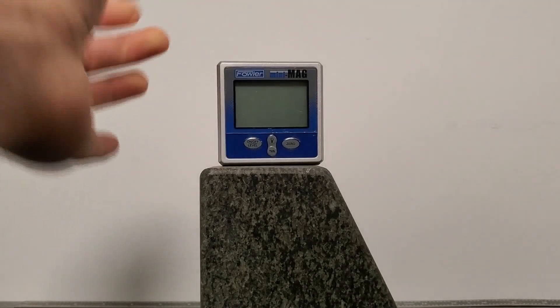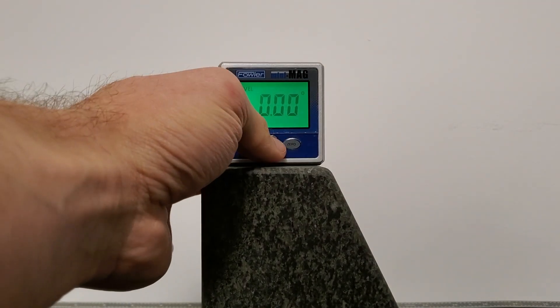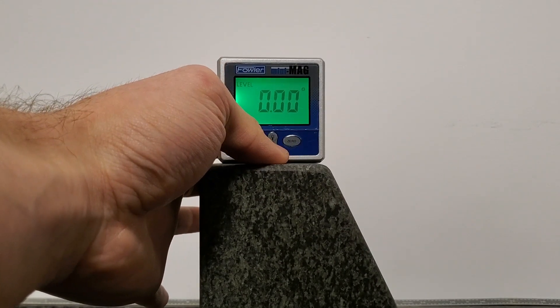We also have the Mini Mag 2. The main difference is it has a backlight, which is toggleable, and there's also the tilt percent function.